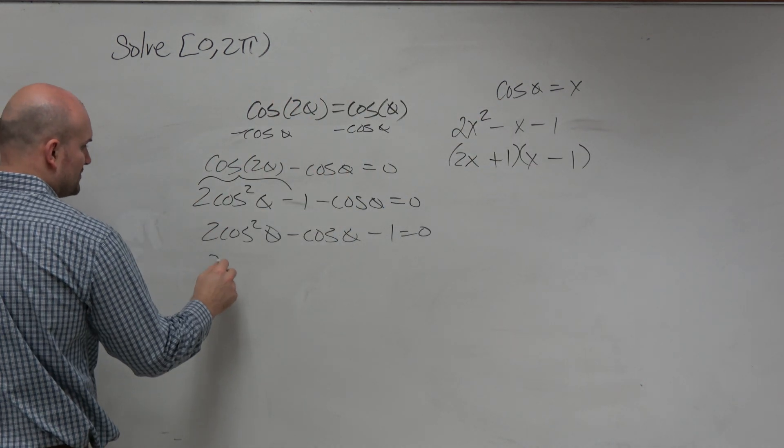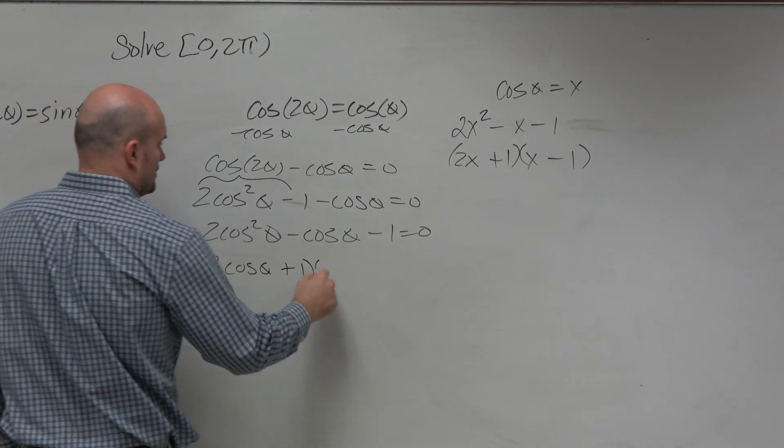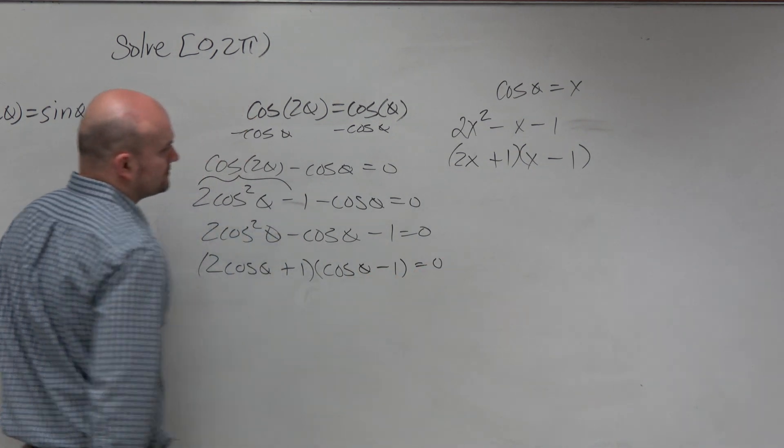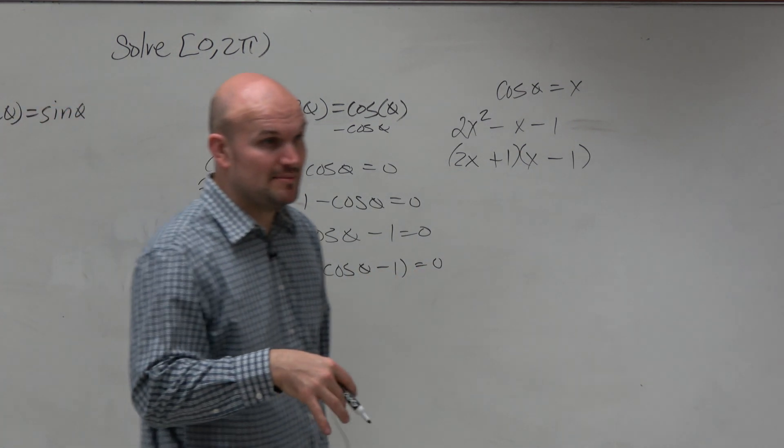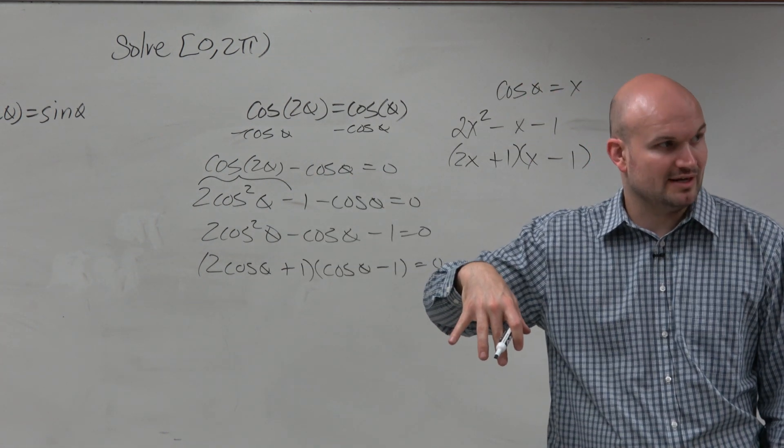So now let's just rewrite this with cosines. Since we're a little short on time, I am going to apply the zero product property and then solve for cosine of theta.